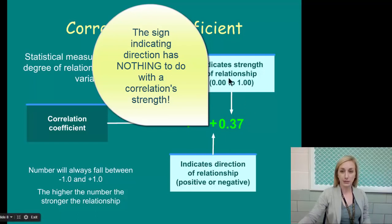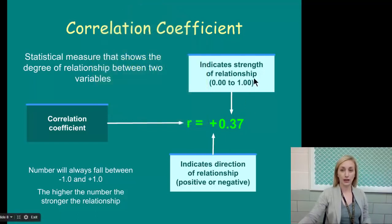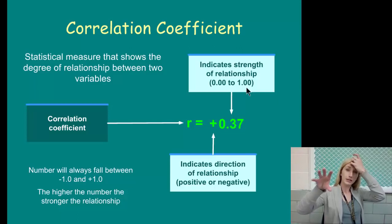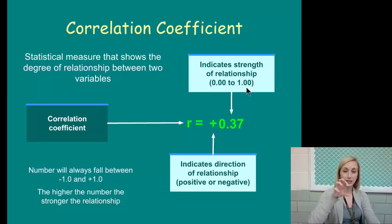The box down here on the bottom indicates direction of relationship, positive or negative. That is a separate entity. The box up here says the number indicates strength of relationship, 0 to 1. The positive or negative sign has nothing to do with the number. The first item is the positive or negative sign saying it's a positive or negative correlation. And then the number, when the number itself, regardless if it's positive or negative, if it's closer to 0, is a weak correlation. The closer it is to 1, the stronger the correlation. So the higher the number, regardless of the direction, the stronger the relationship.